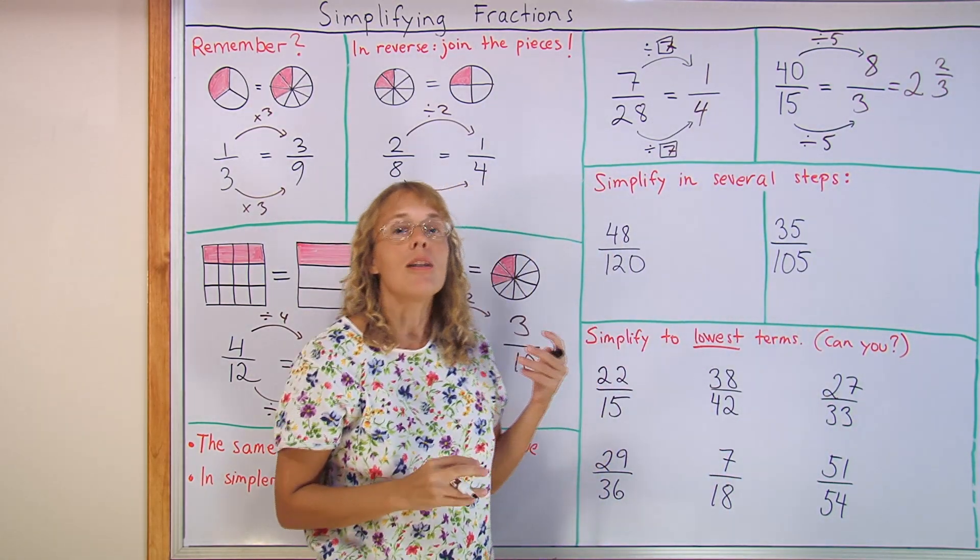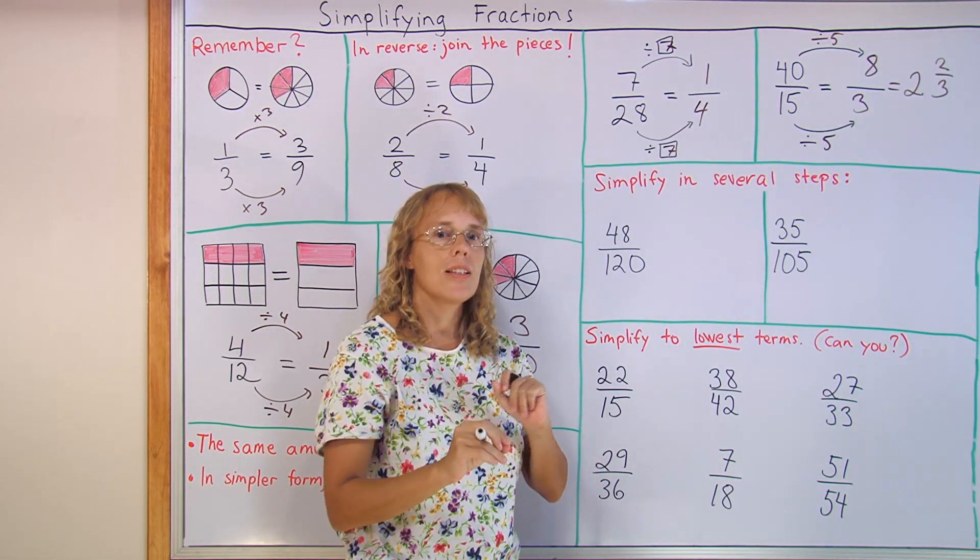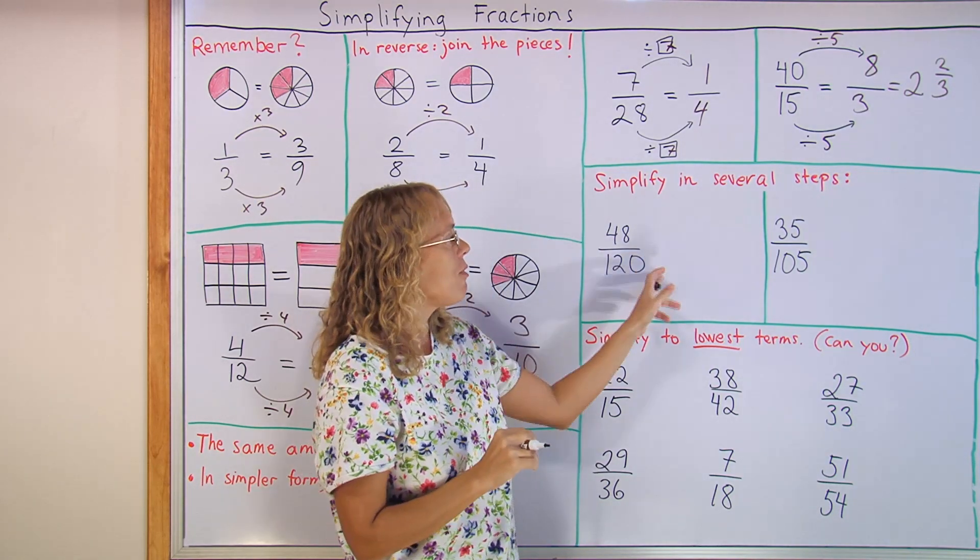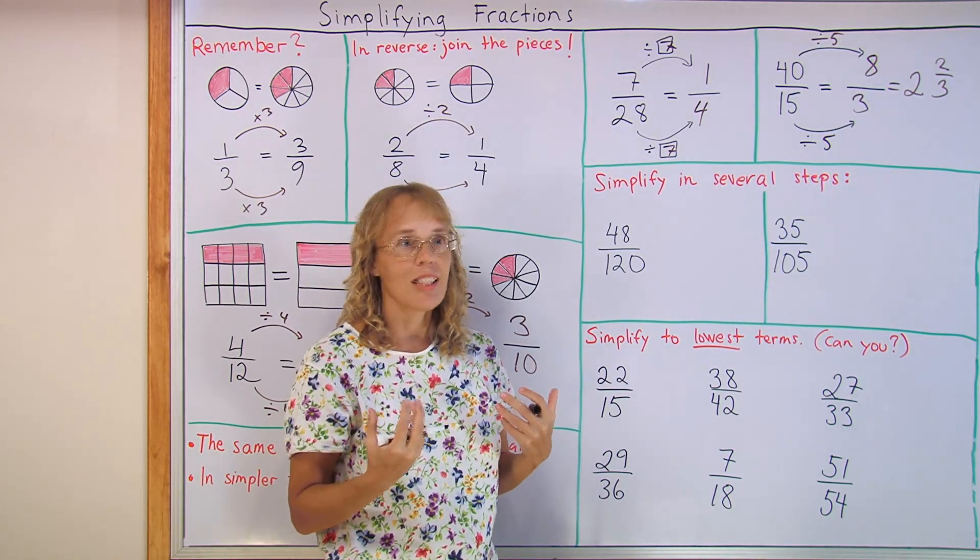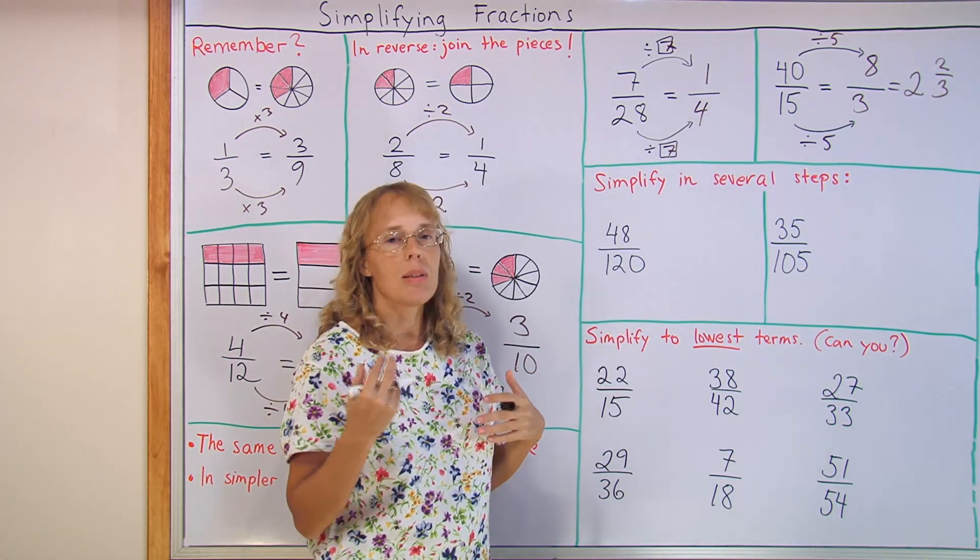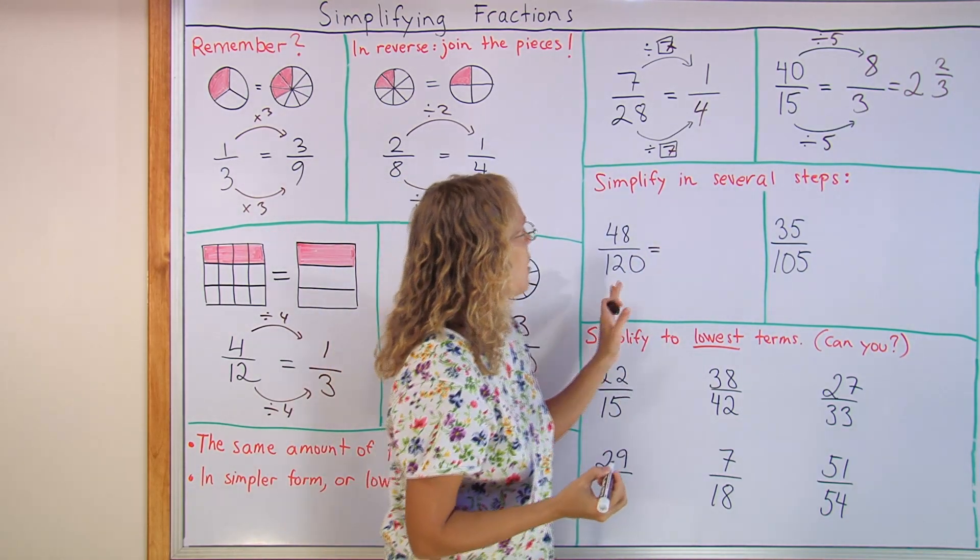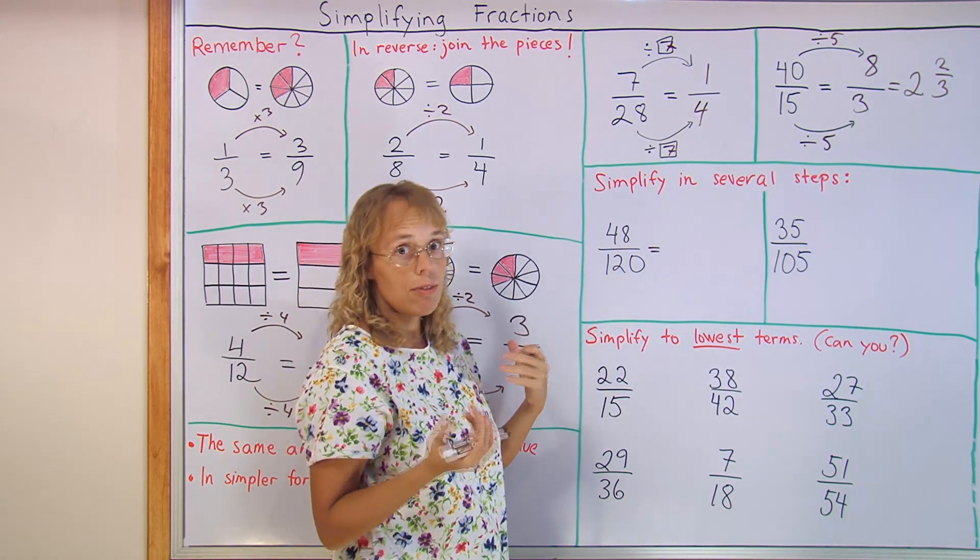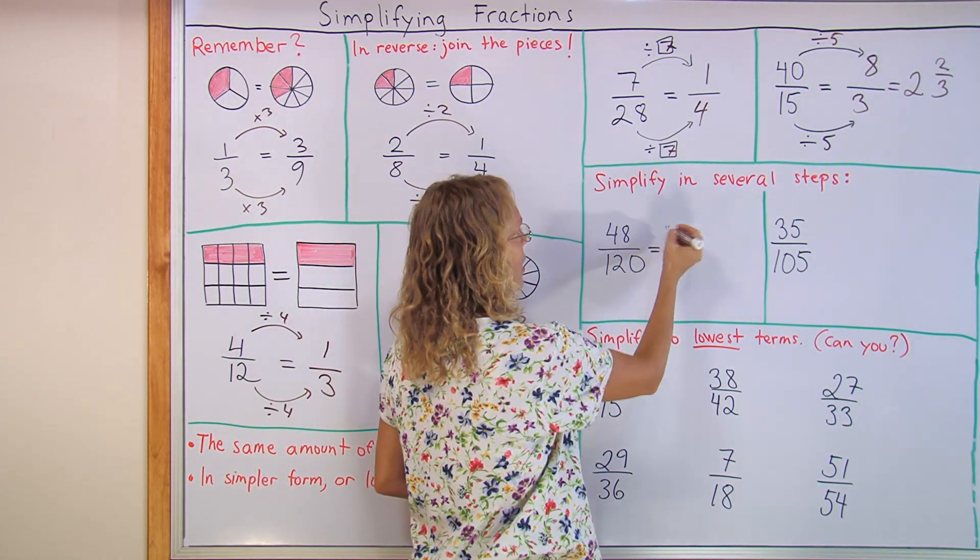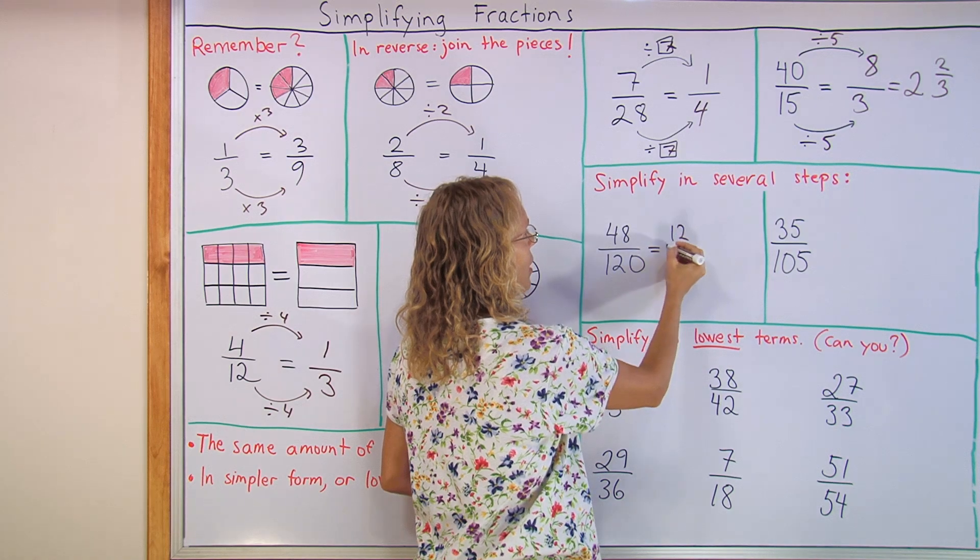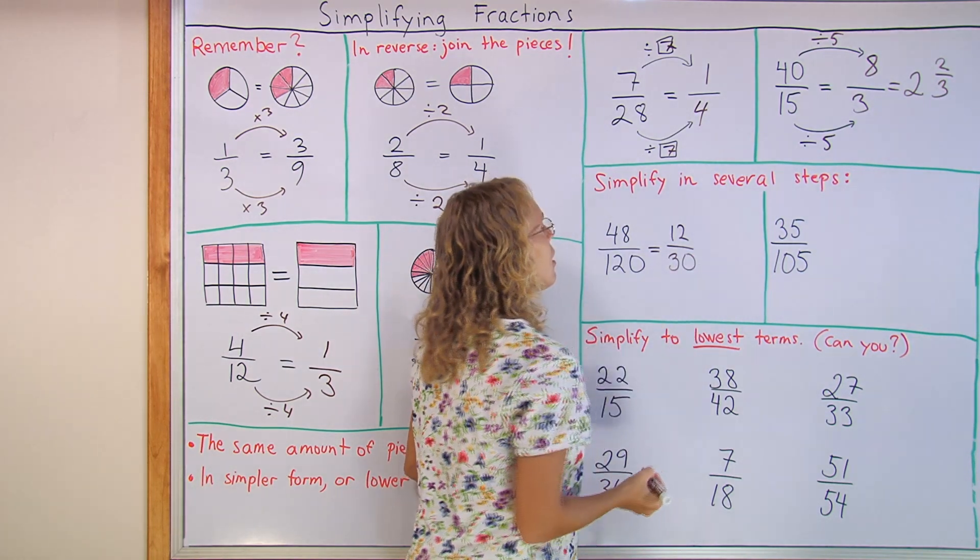Now, these two examples are where we can simplify in several steps. Most school books try to teach you to simplify just in one step, by finding the greatest common factor of these two numbers, and then simplifying by that greatest common factor. But it's not necessary, because we can just simplify in several steps and arrive at the same result. For example, maybe in this particular case, I noticed at first that both numbers happen to be divisible by four. And so I divide by four. Forty-eight divided by four is twelve. And then, one hundred twenty divided by four is thirty.